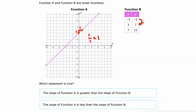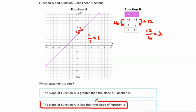And in function B, from negative 5 to 7, that's an increase of 12. And from negative 3 to positive 3 is an increase of 6. And 12 over 6 is 2. And 2 is more than 1, so the slope of function A is less than the slope of function B on this one.